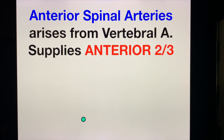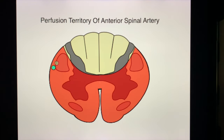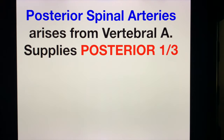Going back to the blood supply — always remember this for your exams: the anterior spinal artery arises from the vertebral artery. The anterior spinal artery supplies the anterior two-thirds of the spinal cord. As you can see, the shaded area here represents the entire anterior spinal artery territory. What is left — the posterior one-third — would be the posterior spinal artery territory, here at your dorsal columns. The posterior spinal artery supplies the posterior one-third.